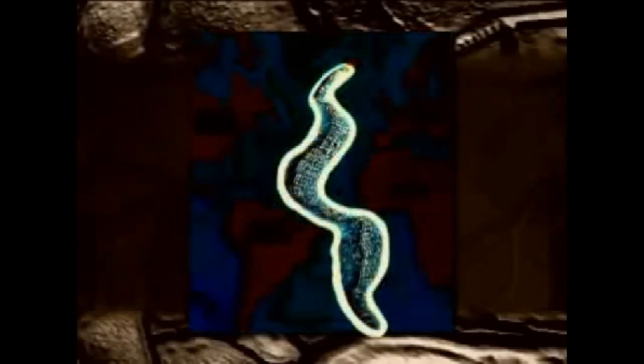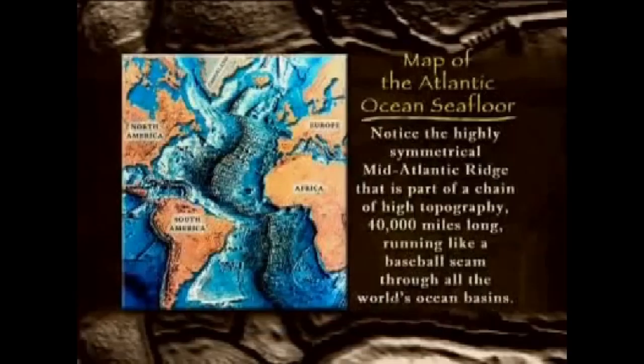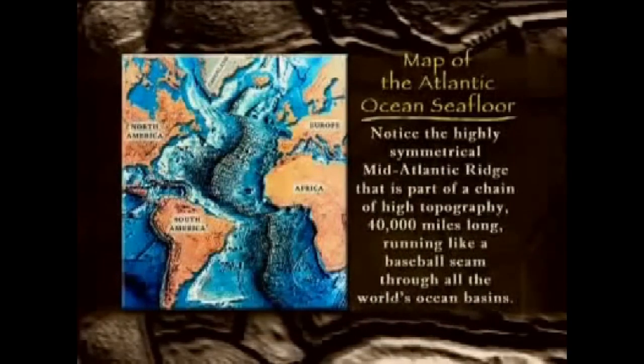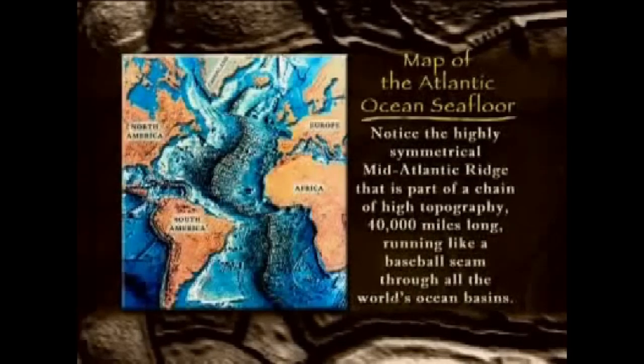In particular, what is known as the mid-ocean ridge system became known for the very first time. And notice this highly symmetrical mid-Atlantic ridge. This ridge is part of a chain of high topography, some 40,000 miles long, running like a baseball seam through all the world's ocean basins. So immediately, Earth scientists began to puzzle as to what could possibly be the explanation for this feature, this major feature of the Earth's surface. The discovery of the mid-ocean ridge system really brought back Alfred's idea of continental drift. Along with the idea that maybe the sea floor is actually spreading. In the 1960s, Plate Tectonics was born.